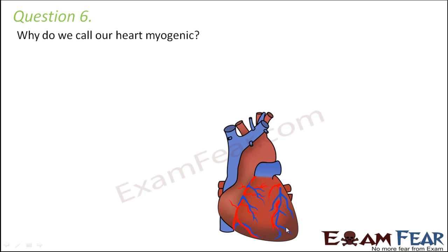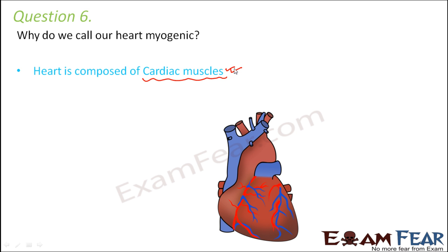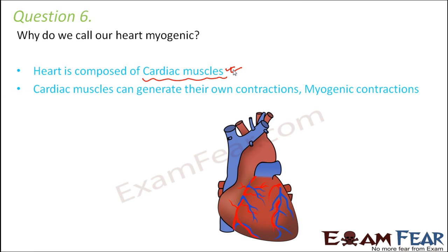Question number six: why do we call our heart myogenic? Our heart is made up of cardiac muscles, which have the special property of being able to produce both muscle and nerve-like functions on their own. Because of these cardiac muscles, automatic heart rate is possible, with impulses generated by the nodal tissues of the heart. These cardiac muscles can generate their own contractions, called myogenic contractions, which is why our heart is said to be myogenic in nature.